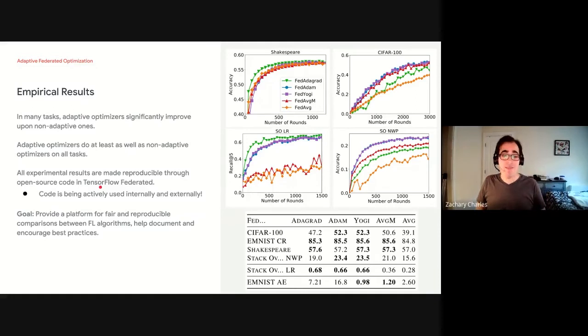And again, it's these rare words that we're really seeing the benefit of adaptivity. And so we have a table here showing the best result within a couple tenths of a percentage point for each task. And really what we found is that FedYogi did at least as well as all the other algorithms throughout. And so this code is available for comparisons externally. So if you have a desire to use it, please do so and please contact us with any questions.